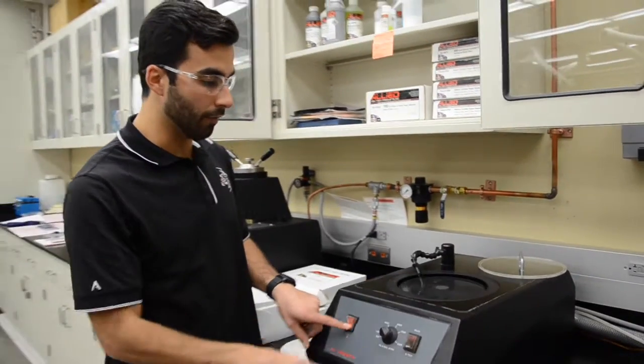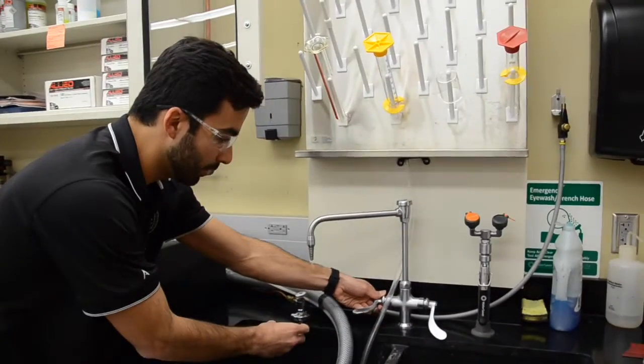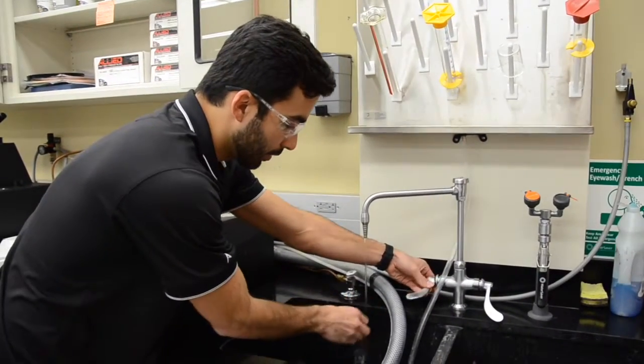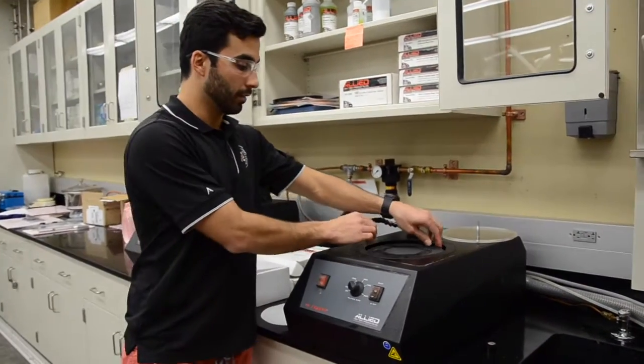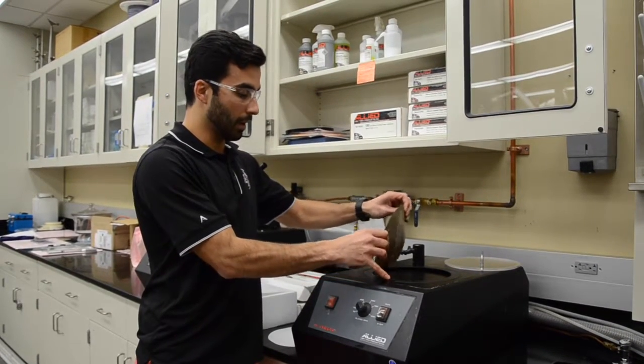As you can see here, once you finish the step, you turn off the machine. You come here and you want to rinse it with water to clean from that step and move to the next step. And then you peel off the sandpaper and get the next one.